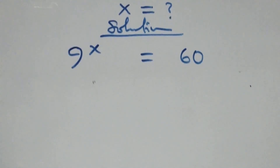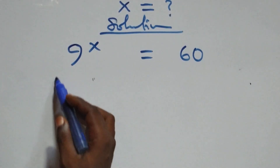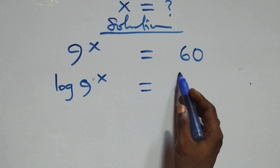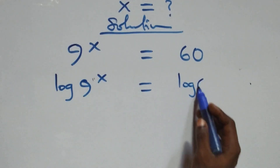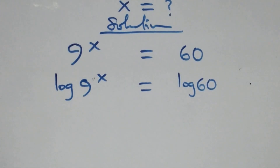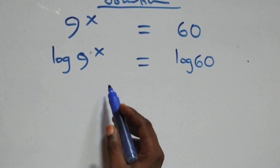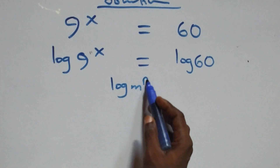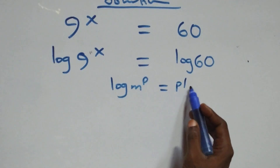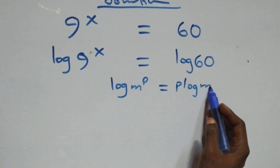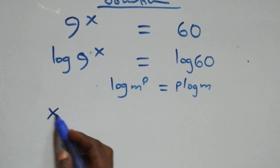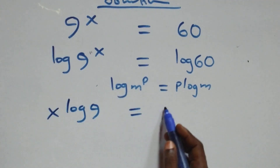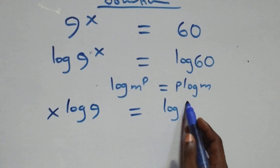We take the log on both sides, giving log of 9 raised to power x equals log 60. Then we apply the power rule of logarithms: log of m raised to power p equals p times log m. So this becomes x times log 9 equals log 60.